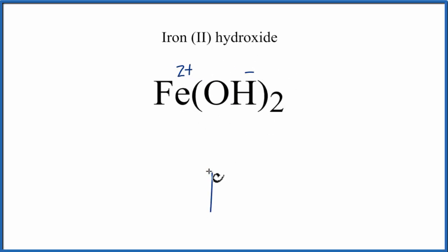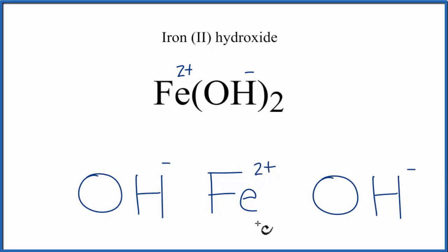So we write Fe, and then we put OH on either side. We see that Fe had this 2+ charge here, and each of the hydroxide ions are negative. Because we have a positive, and then these negatives here, they'll be attracted to it, and that forms the ionic bond.